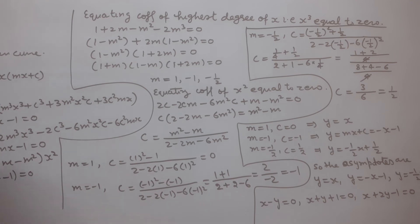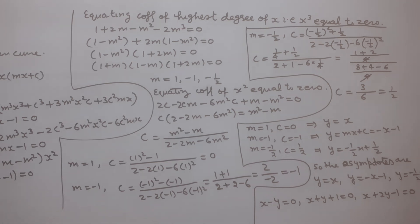To summarize: when finding asymptotes of a given algebraic curve, first substitute y = mx + c into the equation, simplify, and group terms by degree. Equate the highest degree coefficient to zero to find m, then equate the next coefficient to zero to find corresponding values of c. Substituting m and c gives the asymptotes.